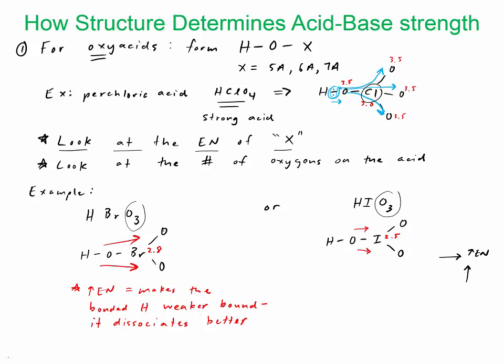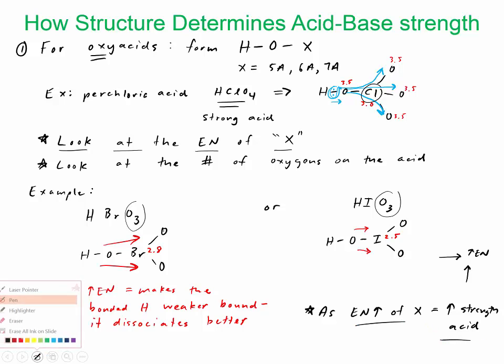We can summarize: as the EN of X increases, it increases the strength of the acid. But don't just memorize that—it's really important to understand this concept of why, this pull on the electrons, and what makes a strong acid is the weak H-O bond and its level of dissociation. This is a very common question on the AP exam.